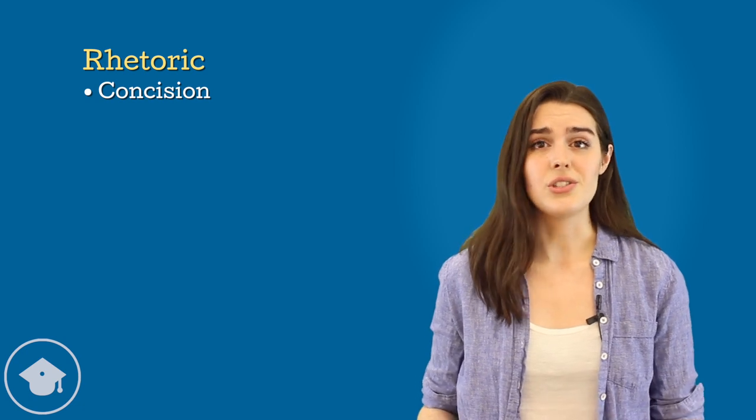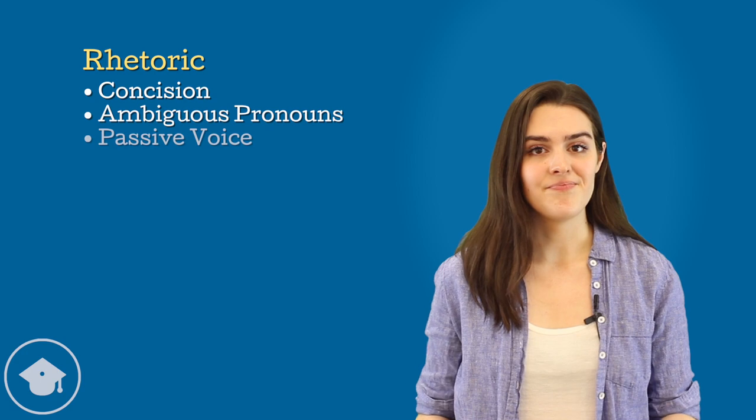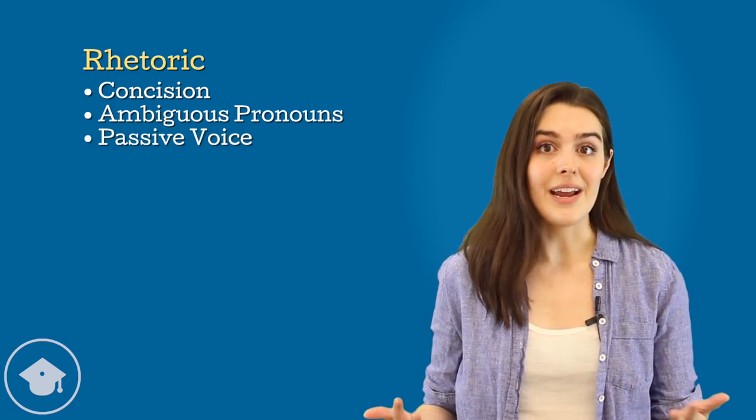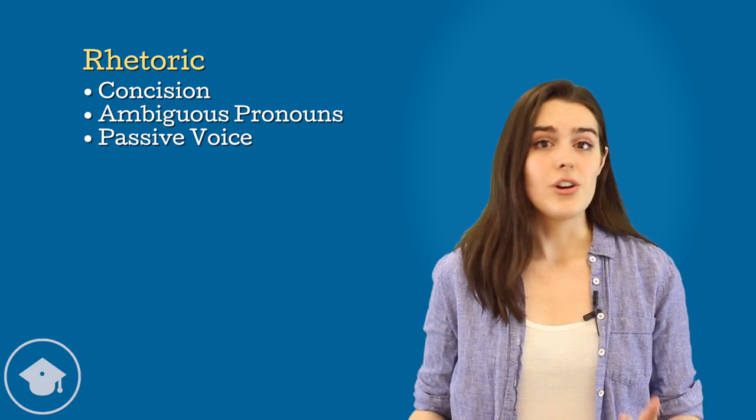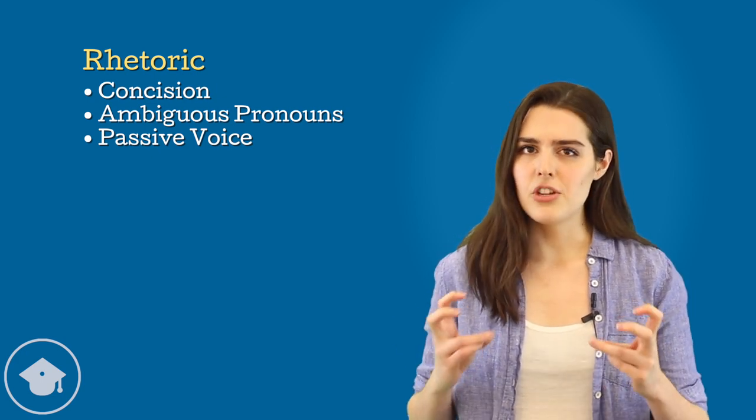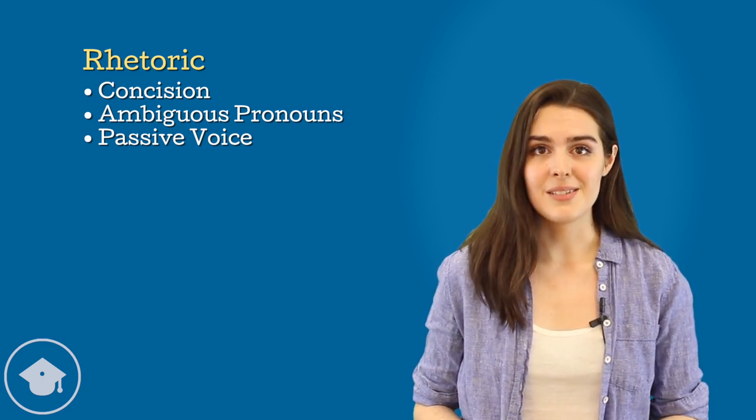A couple others I see students using to eliminate answer choices way too early are ambiguous pronouns and passive voice. Ambiguous pronouns aren't great, but there are real GMAT problems in which the correct answers feature ambiguous pronouns. The monkfish problem we featured in our 700 plus sentence correction webinar is a really great example of this.